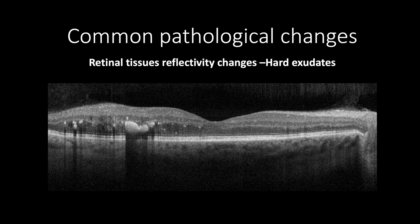This is a case of non-central diabetic macular edema with hard exudates presented as hyperreflective masses with different sizes. They are located in the outer retinal tissue casting shadow artifact, causing hyperreflectivity of the underlying retinal tissues. In contrast, the adjacent hyperreflective dots don't cast any shadow.